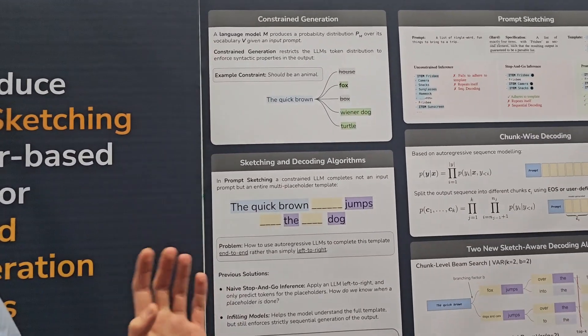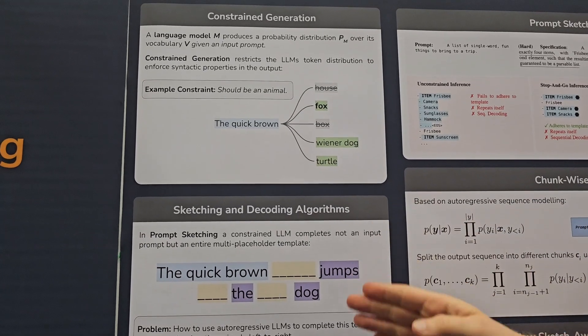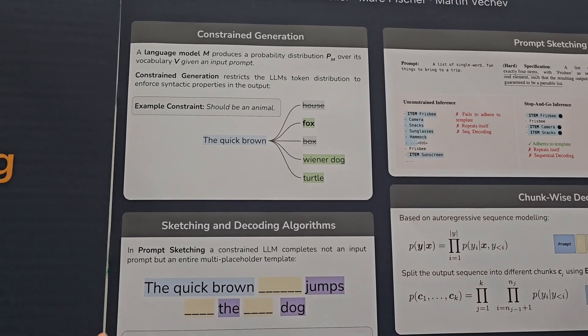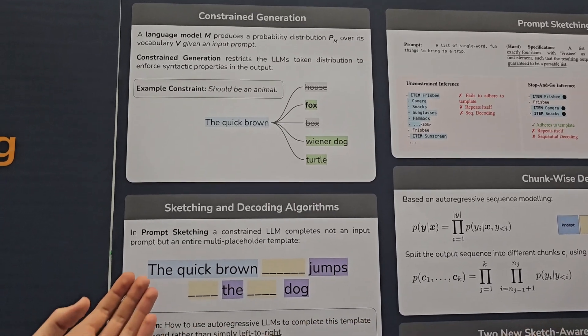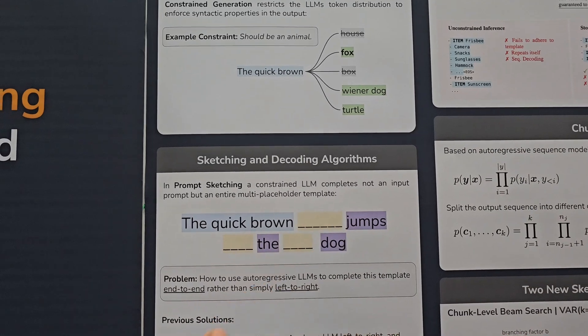In prompt sketching, we posit that when you prompt a language model to complete a certain sentence, you might not only have a prefix, as you have in typical prompting, but you have multiple variables, as illustrated here, that you want to fill in.